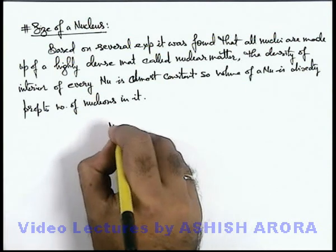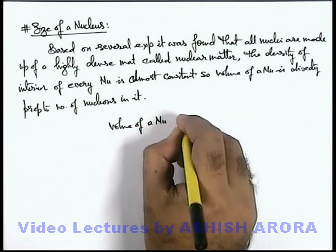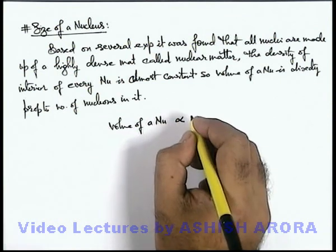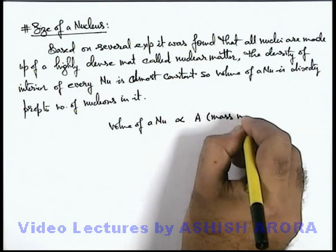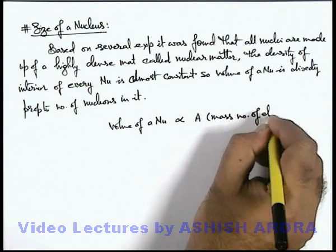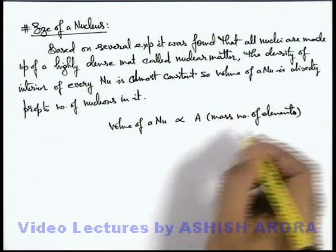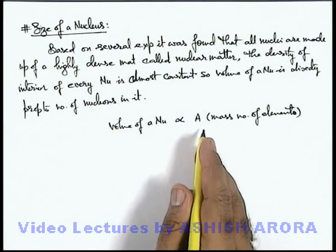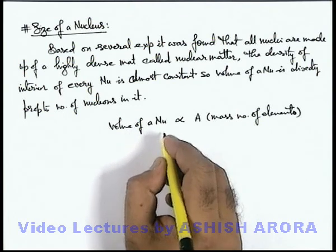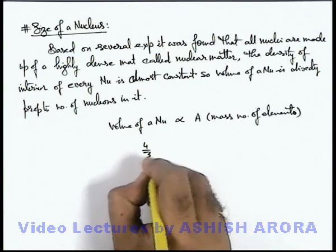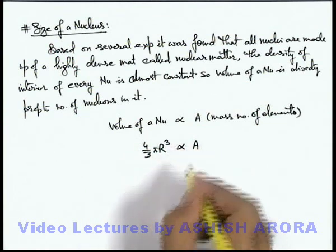So here we can write that the volume of a nucleus is directly proportional to A, which is the mass number of the element — giving us the total quantity of neutrons plus protons in the nucleus. If the nucleus is considered to be spherical, its volume can be written as 4/3 π r³, where r is the nuclear radius, which is proportional to A.